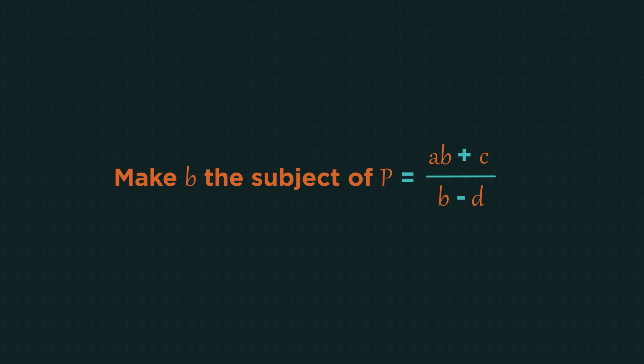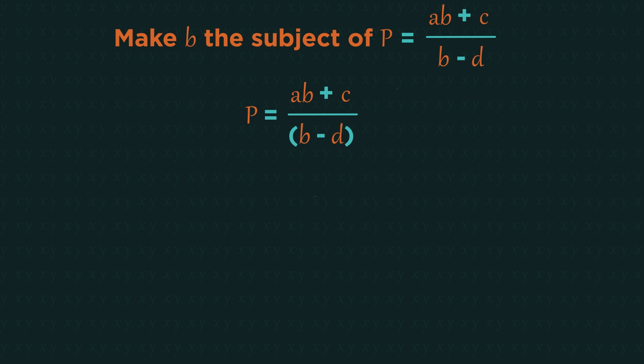If we have this question, because there are two B's we're expecting to factorize at some point. But we first have to start by getting everything on the same level. We can't do anything with this B down here. So multiply both sides by B minus D and then expand the brackets on the left hand side.